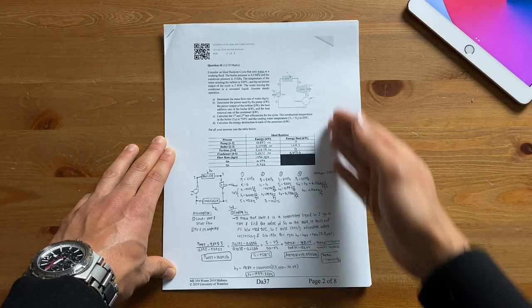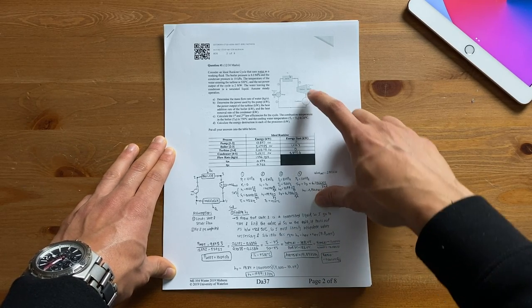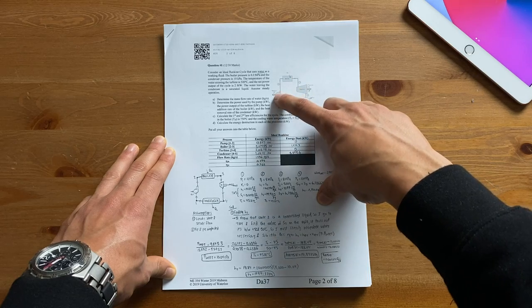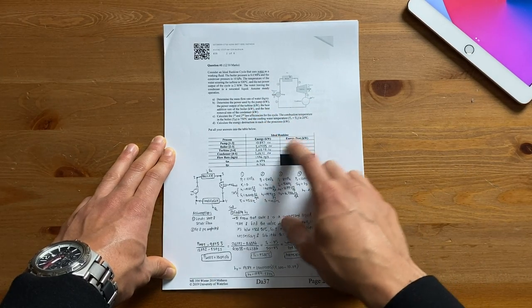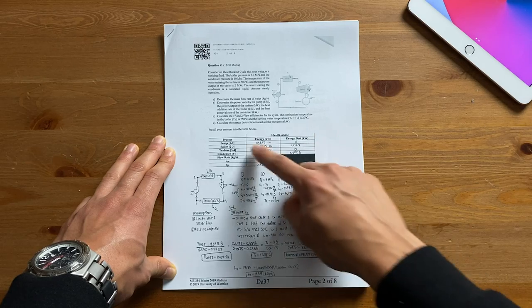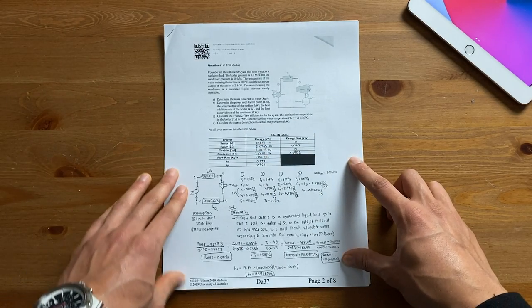For the first question we're given this thermodynamic system that contains a bunch of machines like turbines and pumps. We're told that the pressure and temperature changes throughout the system so we're asked to find a bunch of things including temperatures, pressures and energy at different points throughout the system.